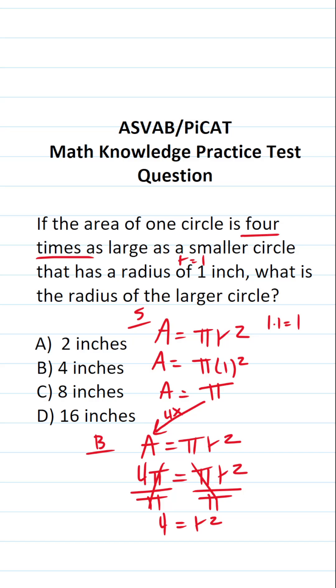To get r, the radius by itself, we're just going to take the square root of both sides. This crosses out. This says r equals the square root of 4, which is 2. So what is the radius of the larger circle? It's 2 inches.